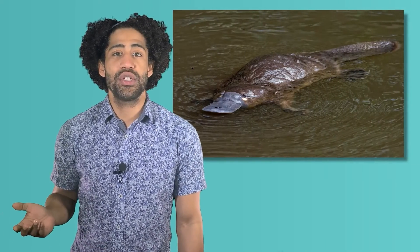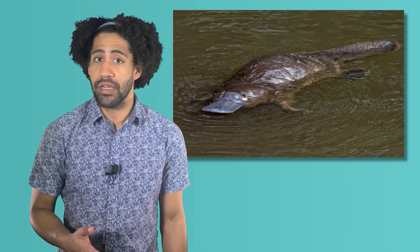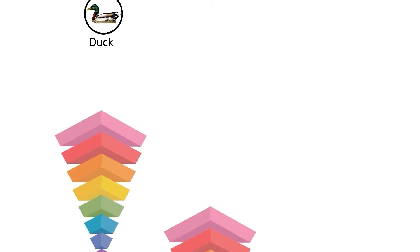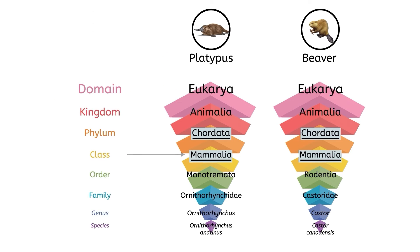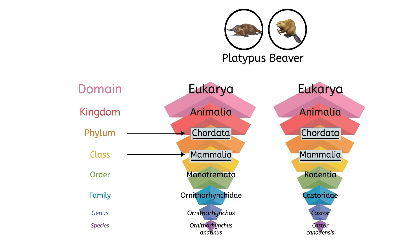For example, do you think that this strange egg-laying animal called a platypus is more closely related to a duck or a beaver? Well, simply by looking at the taxonomic system, we can see that while the platypus shares the phylum Chordata with both beavers and ducks, the platypus is also a mammal like the beaver, because the class Mammalia is smaller or more specific than phylum. This tells us that our friend the platypus is more closely related to beavers.